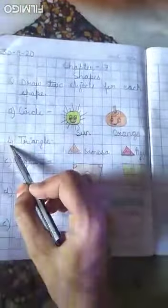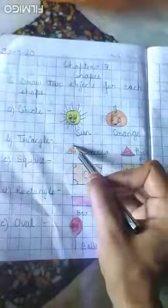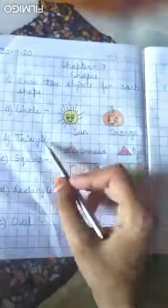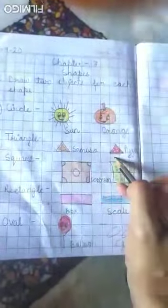Now next, B. Triangle. Triangle means three corners. Teen kone hota hai triangle ke. First you will make samosa and you will make pizza.